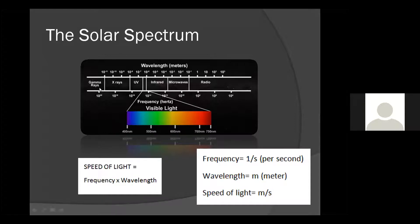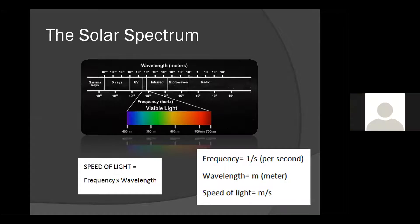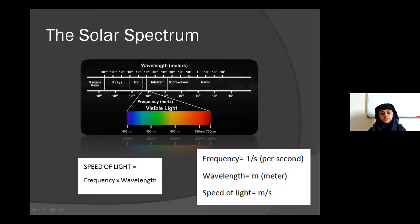Note that gamma rays and X-rays are not considered part of the solar spectrum. Only the ultraviolet part and beyond are considered. Ultraviolet is not visible to us. The solar spectrum comprises ultraviolet, visible, and infrared regions.